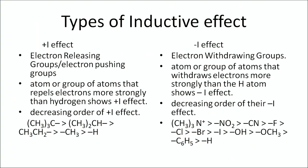There are two types of inductive effect: +I effect and −I effect. The +I effect depends on which group is attached to the carbon chain. If electron-releasing or electron-pushing groups are attached, they will show +I effect. If electron-withdrawing groups are attached, they will show −I effect.